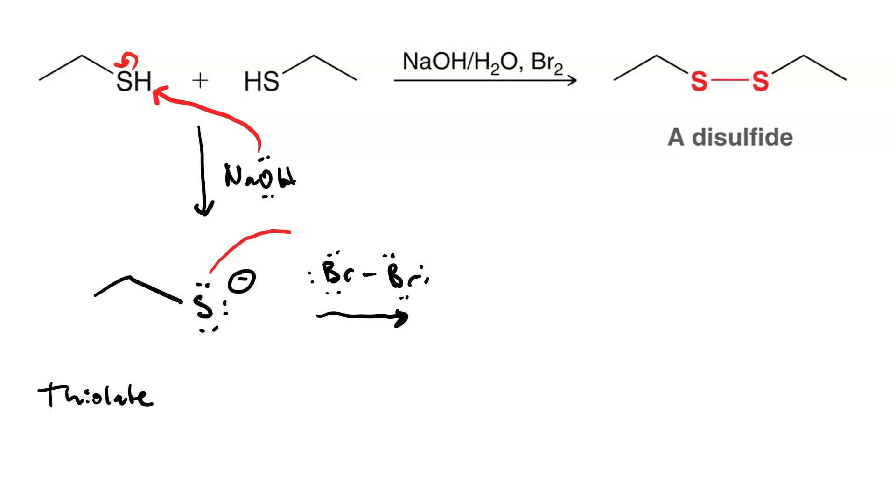In the second step, this ethane thiolate attacks the bromine and we get loss of a leaving group. That's classic SN2.